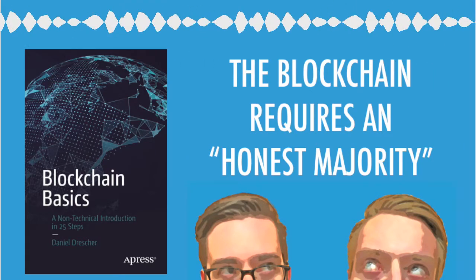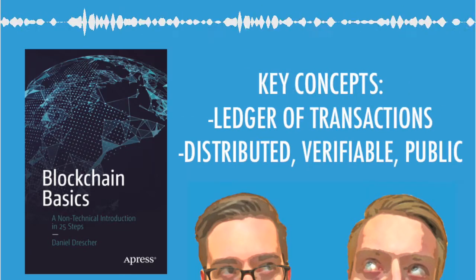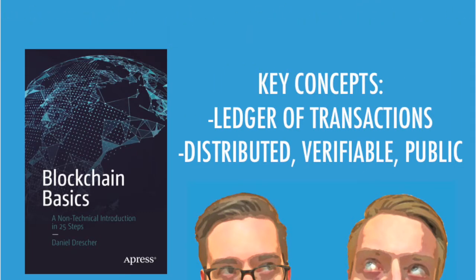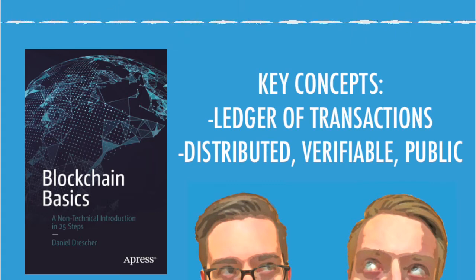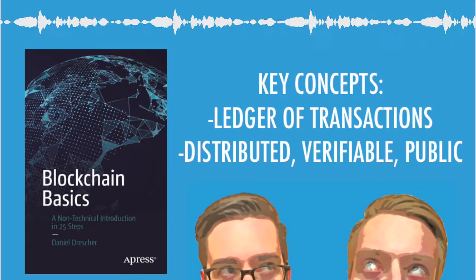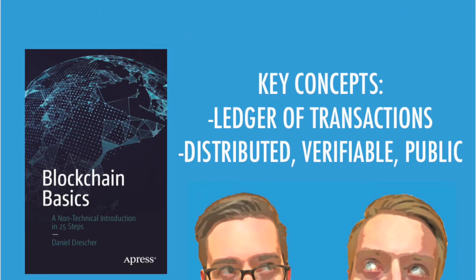To recap the general concepts: all the blockchain really is at its heart is a ledger of transactions. We often think of these as Bitcoin transactions, but it doesn't have to be that way — it could be transferring whole ownership records in a particular state, or all kinds of other things. But all you really have to know is that it's distributed, it's verifiable, we use cryptography to make sure transactions are correct, and it's public. Anyone can read these transactions on the blockchain — it's part of what makes it secure and allows us to record them without needing a central authority.